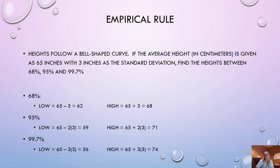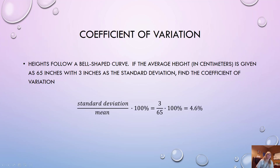For 95%, it's mean minus two standard deviations to mean plus two standard deviations. For 99.7%, it's mean minus three standard deviations to mean plus three standard deviations. Learn that empirical rule — it's important.